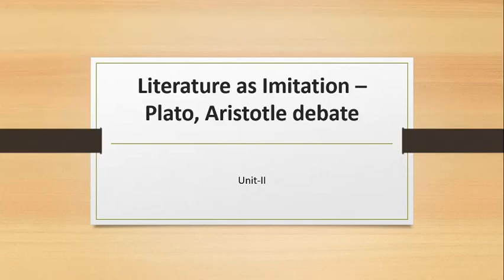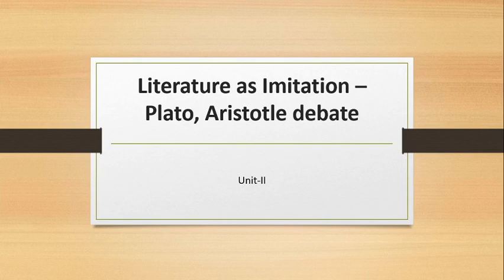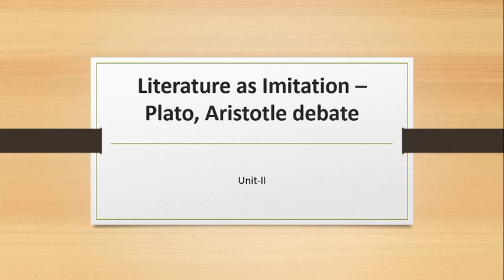Hello friends, welcome to another video. Today we are going to start Unit Number Two, and the first chapter is 'Literature as Imitation,' with the subtitle about the Plato and Aristotle debate. It was Plato who introduced the concept of literature as imitation. Both Plato and Aristotle used the Greek word mimesis, meaning imitation — to follow or obey others.